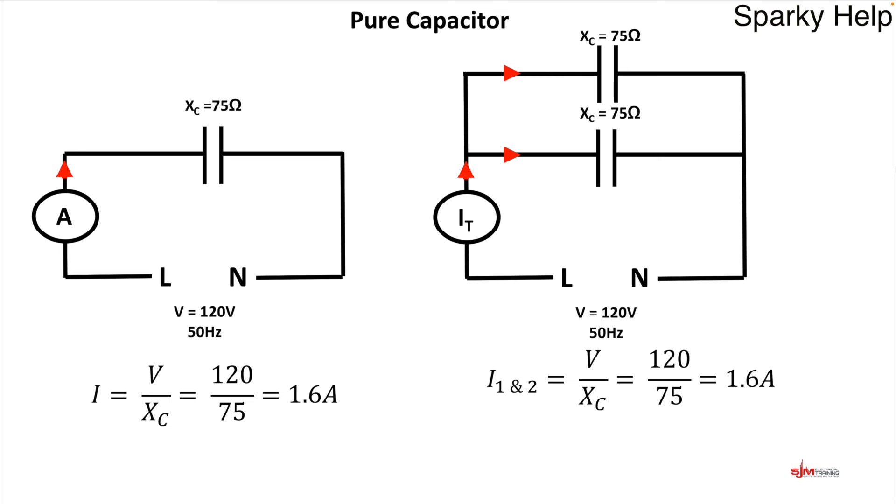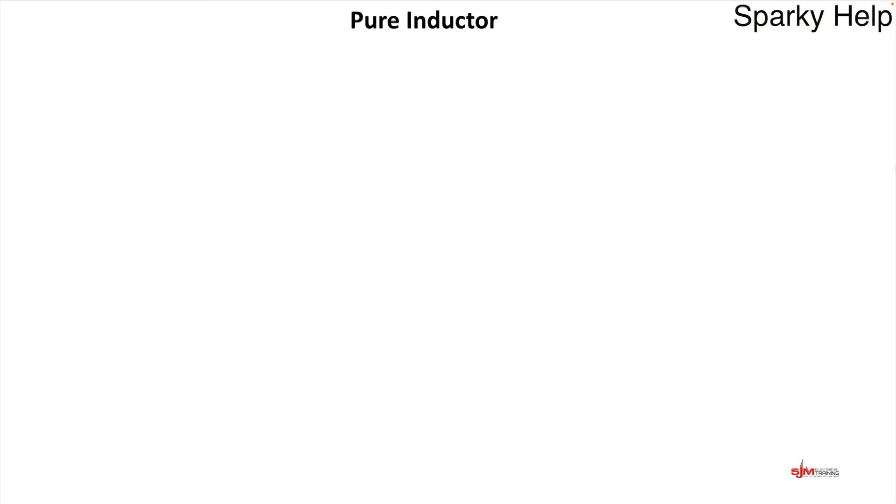We have 75 Ohms, we can apply Ohm's law and 120 divided by 75, we get 1.6 amps. Now let's put two in parallel with each other, two identical ones, and we can apply Ohm's law again, 1.6 amps in I1 and I2. And we can apply Kirchhoff's current law, and it would be 3.2 amps.